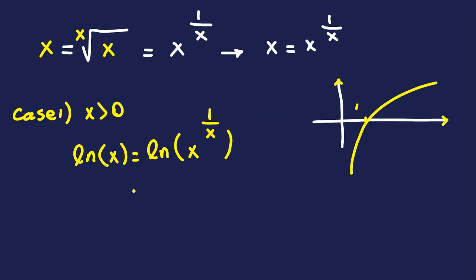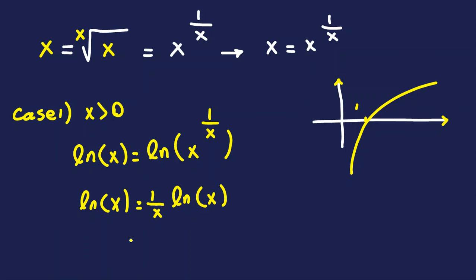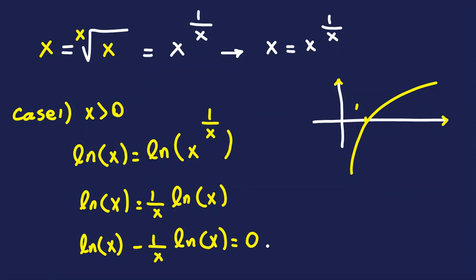So we have: ln x = (1/x) · ln x. Bringing everything to one side: ln x − (1/x) · ln x = 0. Factoring out ln x gives: ln x · (1 − 1/x) = 0.